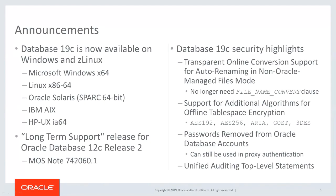Today's product announcement: Oracle Database 19c is now available for Windows and ZLinux. We now have Windows, Linux, Solaris, AIX, and HP-UX covered. Importantly, 19c is not a new release — it is the long-term support release for Oracle Database 12c Release 2, essentially patch set 12.2.0.3, similar to how 10.2.0.5 was the terminal release for 10g R2 and 11.2.0.4 for 11g.